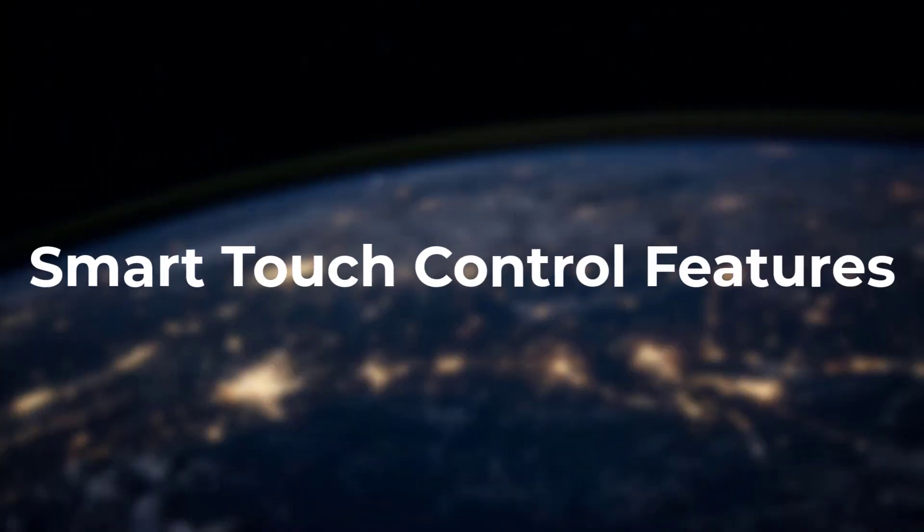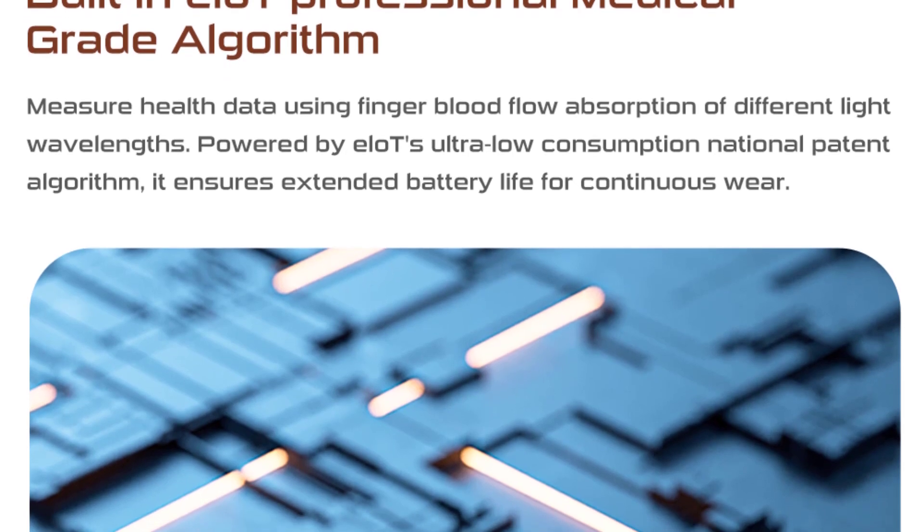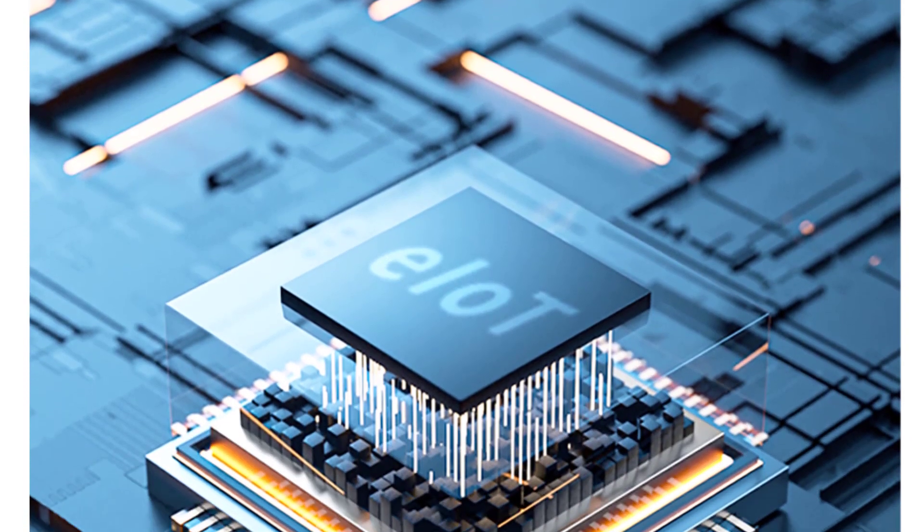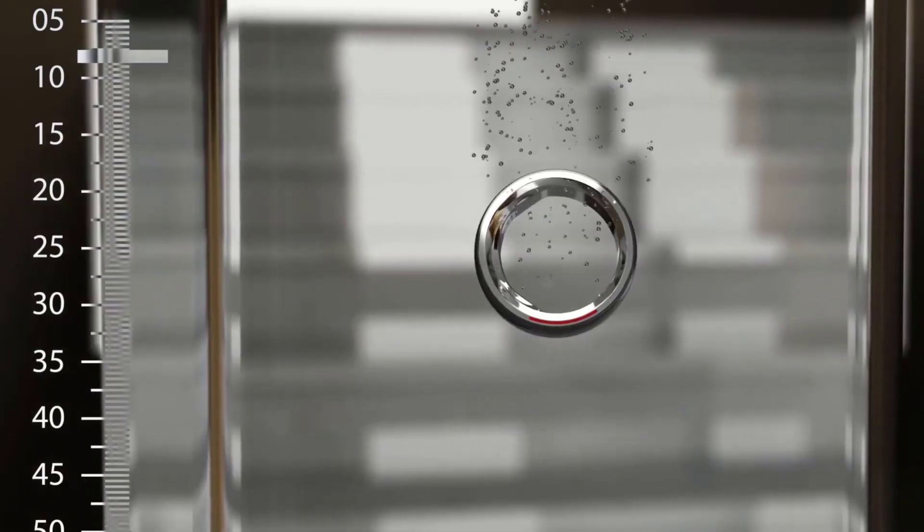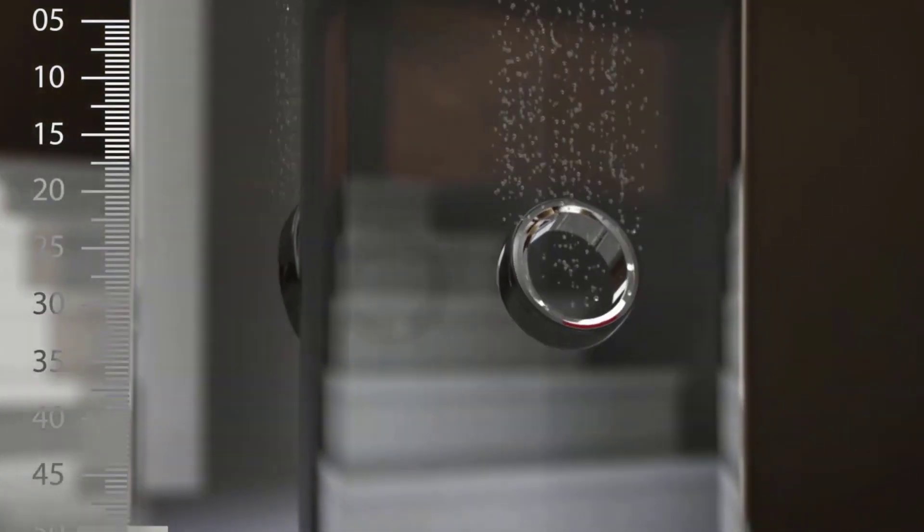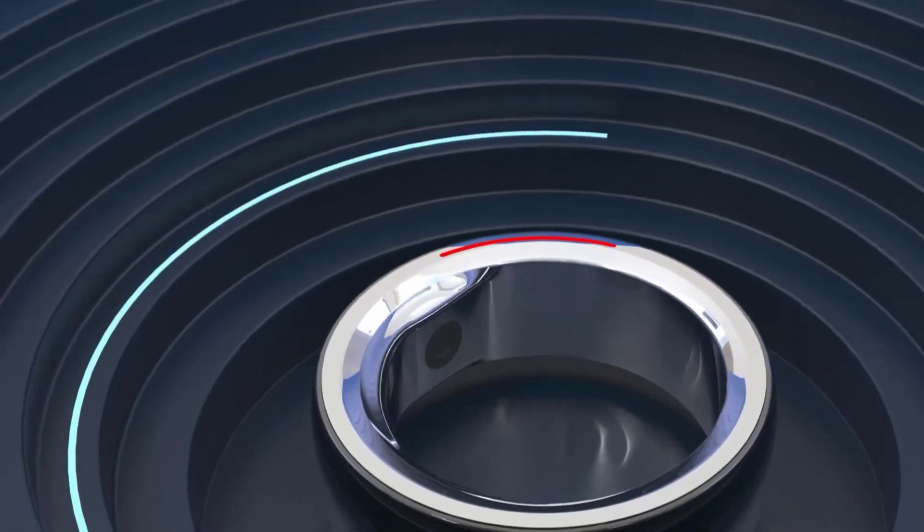Smart touch control features. The ROGBID Smart Ring also lets you actively control other devices using the touch surface. You can customize taps and swipes to trigger actions like controlling music playback, remotely snap photos with your phone camera, toggle smart lights in your home, lots of possibilities here.